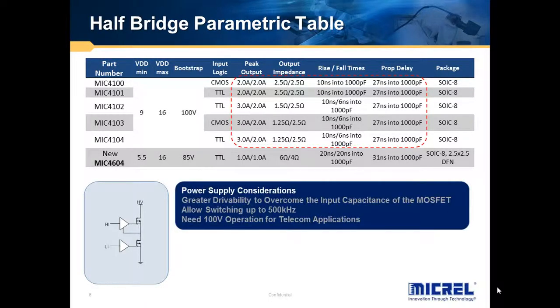So let's talk about some of the considerations in power supplies. They definitely need a lot more drive ability so they can overcome the input capacitance of the MOSFETs. And they also need to switch at very high speeds, typically about 300 kilohertz, and some even as high as 500 kilohertz. And they need the 100 volt operation so they can address some of the telecom applications.